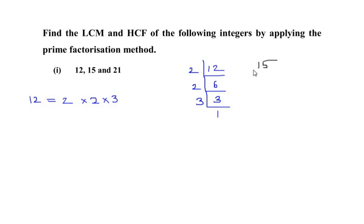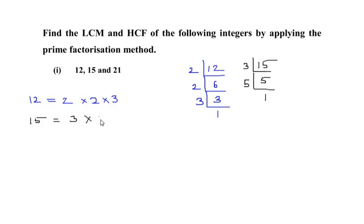Next, finding the factors of 15 by repeated division: 15 goes in the table of 3, so 3 times 5 is 15, and 5 is a prime number so 5 times 1 gives 5. So 15 = 3 × 5. Finally for 21: 21 goes in the table of 3, so 3 times 7 is 21, and 7 is a prime number so 7 times 1 gives 7.